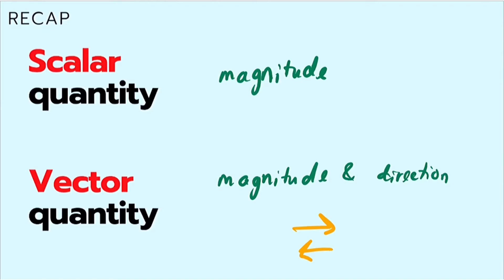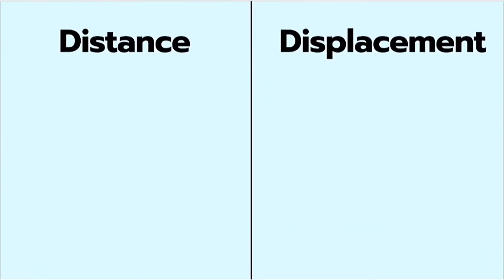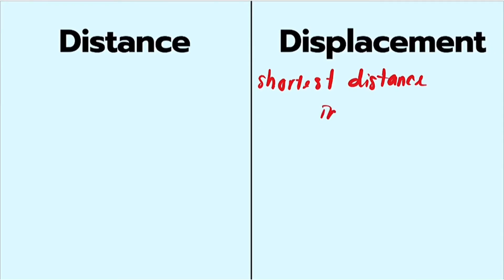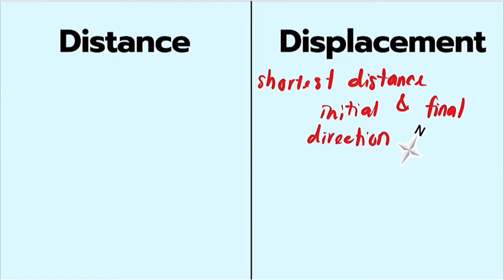There are about five new terms in linear motion you have to be familiar with. First off, we have distance and displacement. Distance is the length of route covered. Displacement is defined as the shortest distance between the initial position and the final position of an object in a specific direction. The biggest difference between distance and displacement is that distance is a scalar quantity, while displacement is a vector quantity. Therefore, in distance the direction of the object is not important, but when looking for displacement, the direction plays a part and affects the final quantity.